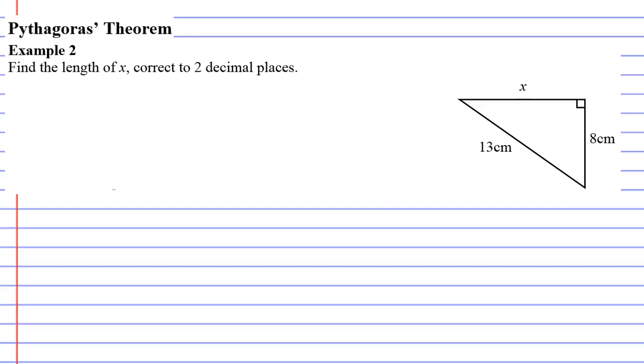Pythagoras Theorem Example 2. This time it wants us to find the length of x correct to two decimal places. And this one's a little different because x this time is not the hypotenuse.